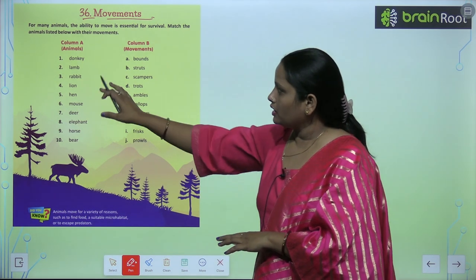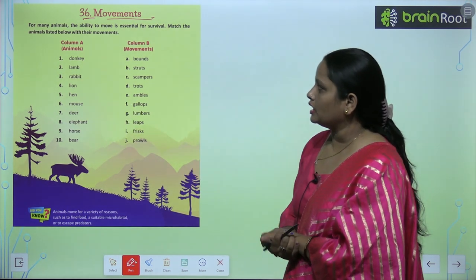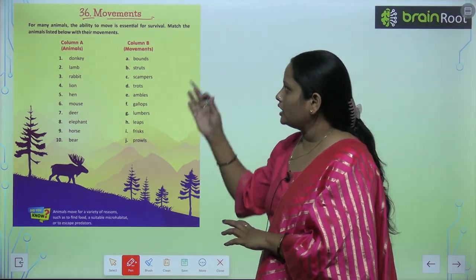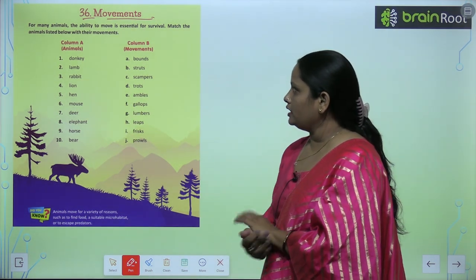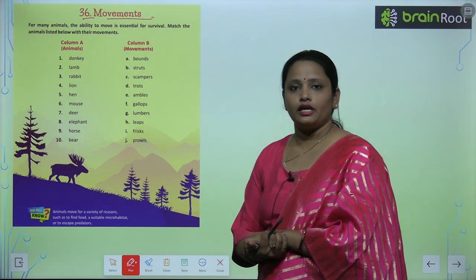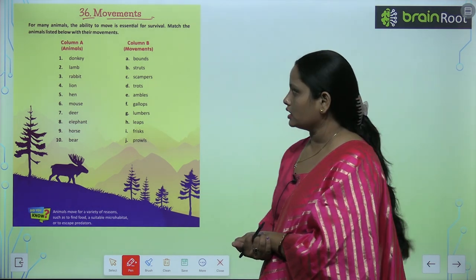Here in column A you can see the names of animals are given, and in column B the movements they make is given.